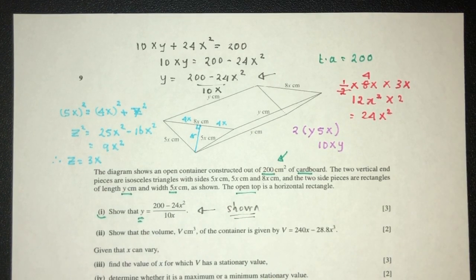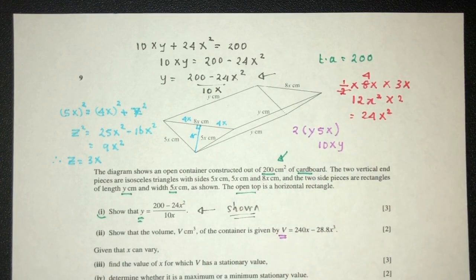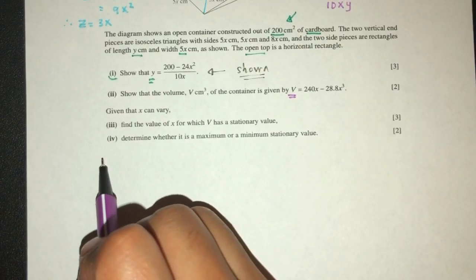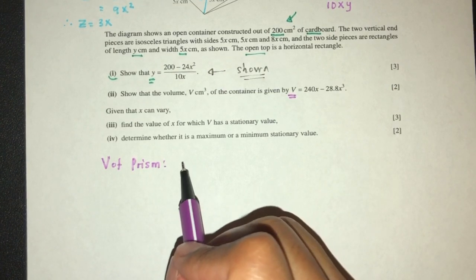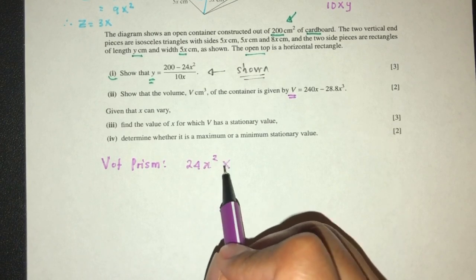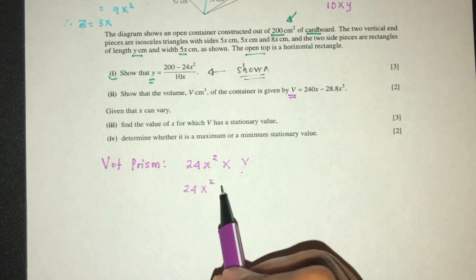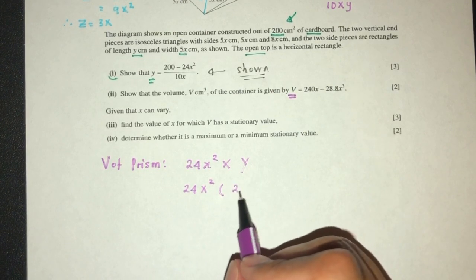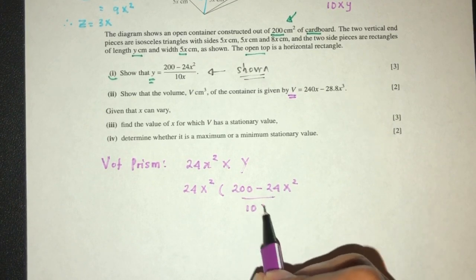Now part two, we have to show the volume V is given by this. Now how do you find the volume of a prism? We find the area of this side and times the length to find the volume. Volume of prism is the area of cross-surface, which is area of triangle, and is 24x square, times the length which is y.